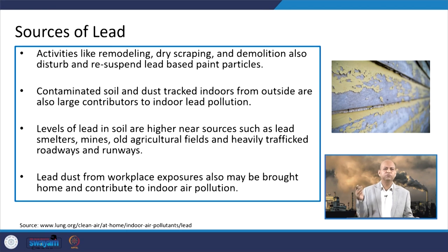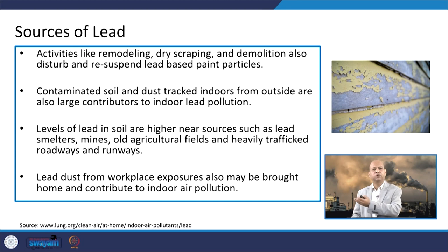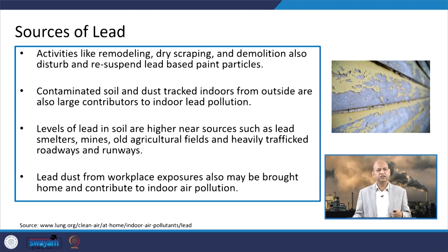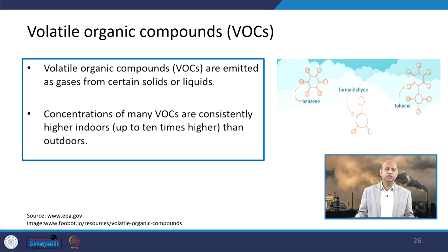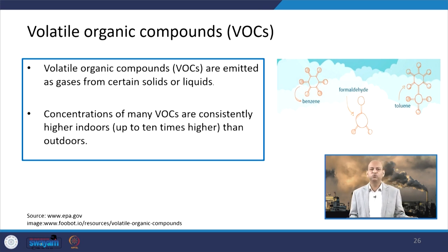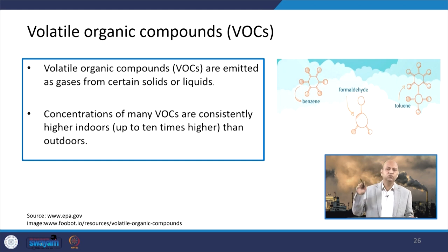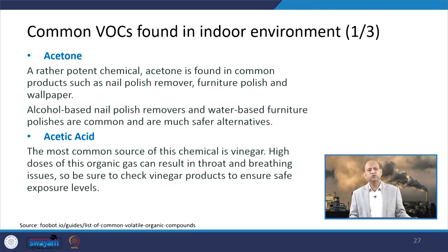Lead can also come from smelters, mines, and old agricultural fields — entering outdoors and then infiltrating inside buildings and workplaces. When we talk about volatile organic compounds (VOCs), they also come from paints. In indoor environments, VOC concentrations can be 10 times higher than outdoors, which is dangerous because many people are allergic to VOCs, so we should ensure levels stay within permissible limits.